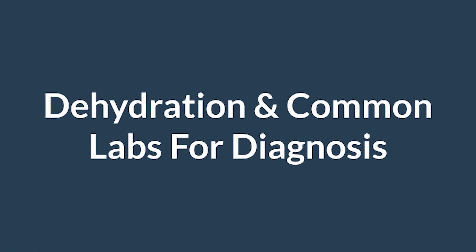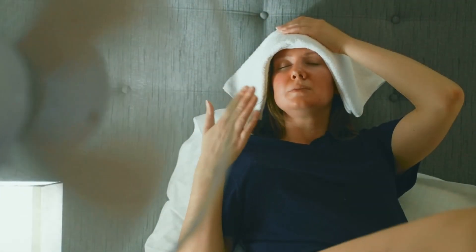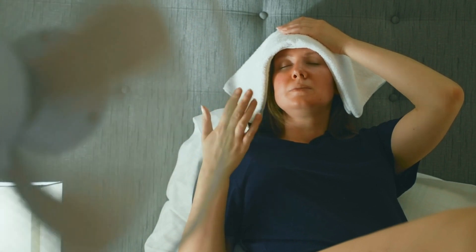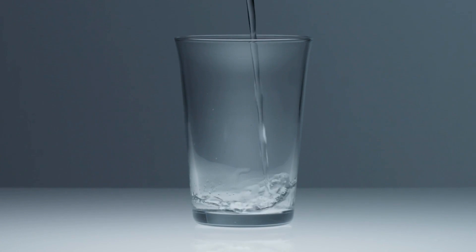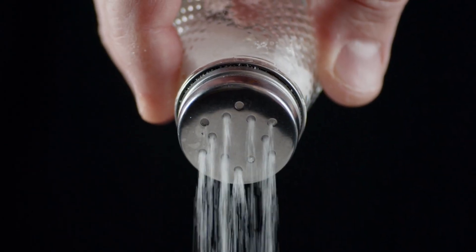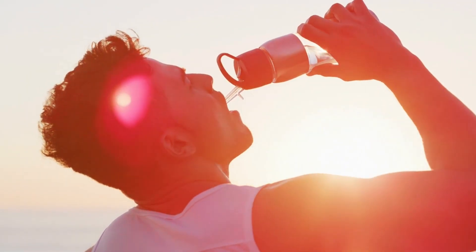Let's talk about dehydration and common lab values used to diagnose it. Dehydration directly relates to an individual's total body water volume status. Dehydration occurs when total body water is greatly reduced below the normal level and results in disproportionate concentrations of sodium and potassium in the plasma. For example, if you're exercising and sweating heavily, your body's water level will drop and your sodium level will drop considerably as well, which if not replenished can lead to dehydration.